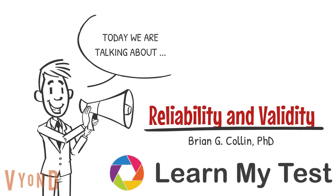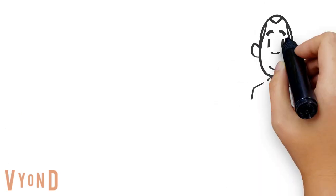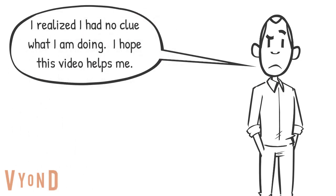Thank you for watching our video on reliability and validity. This is Ball Tai. Ball wants to make an intelligence test that is better than all the other intelligence tests out there, but how is Ball going to know that his intelligence test is better than all the others? It will have to have really good reliability and validity.